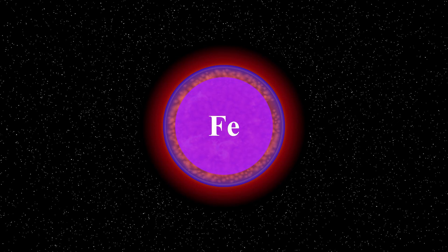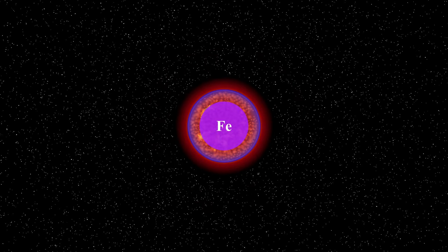Once stars have got to a point where their core is made of iron, the fusion process stops. Gravity once again dominates. The star quickly begins to collapse.